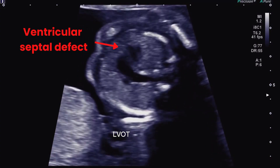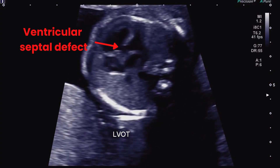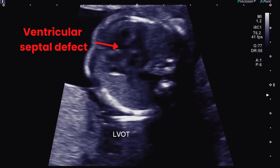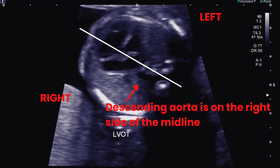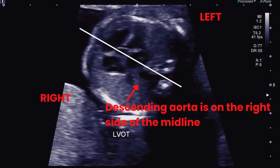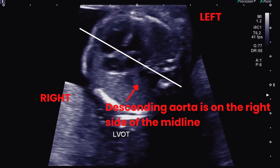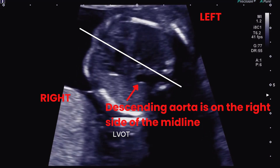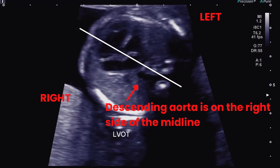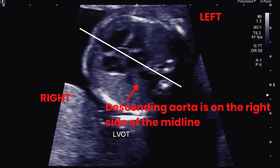This is a subaortic membranous ventricular septal defect. The descending aorta must always be on the left side of the midline. As you can see from the clip, the descending aorta is on the right side of the midline. This is abnormal.